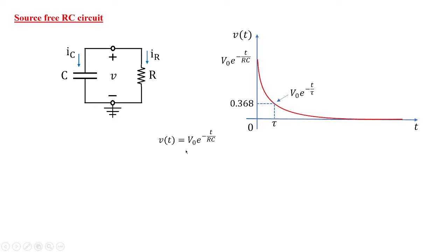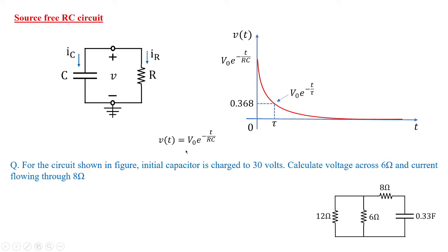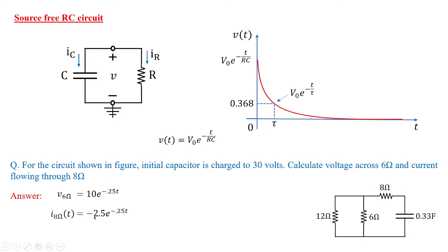In our past class I asked you to solve a problem where a capacitor of 0.33 farads is charged to 30 volts, and you need to calculate the voltage across 6 ohms and current through 8 ohms. The answers were: voltage equals 10 e to the power of minus 0.25t, and current through 8 ohms equals minus 2.5 e to the power of minus 0.25t. We are going to see how we got this answer.